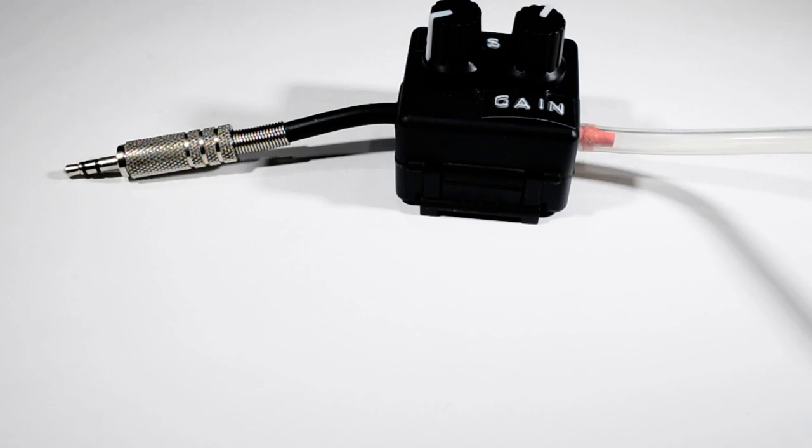So we have an analog voltage representing how hard we're blowing. Why not just send that straight to a voltage-controlled amplifier?